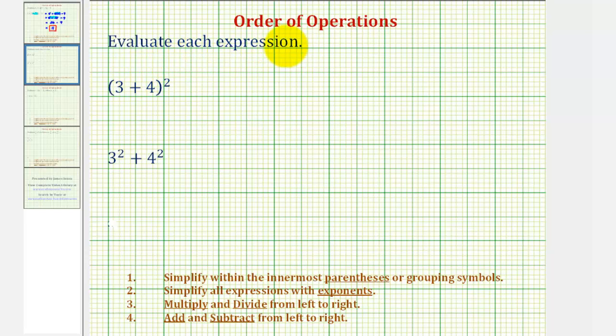We want to evaluate each expression. The directions may also say simplify each expression. Our first expression we have the quantity three plus four squared, and the second expression we have three squared plus four squared.